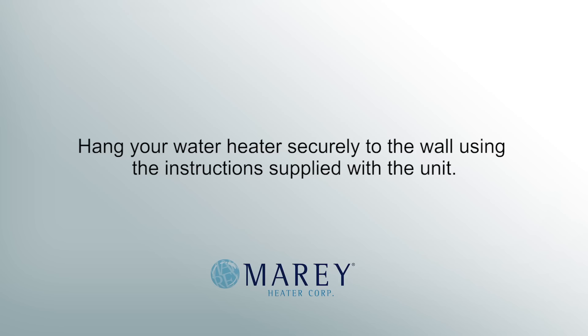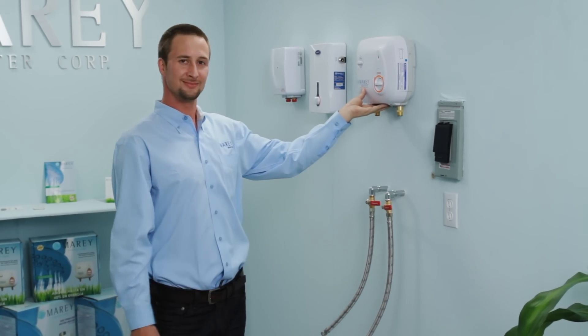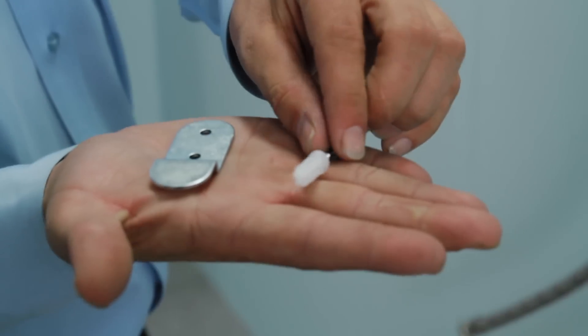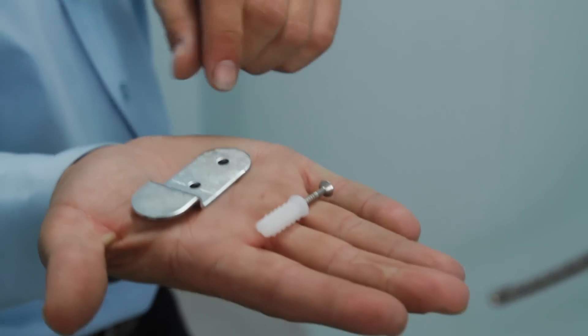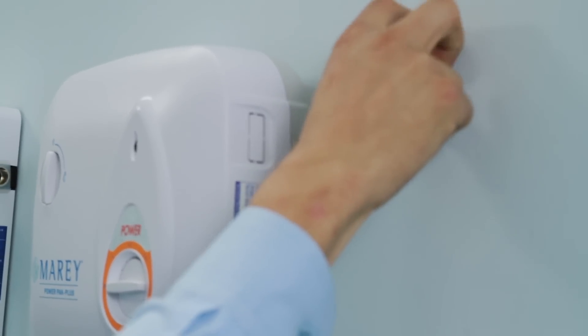Hang your water heater securely to the wall using the instructions supplied with the unit. The hanging instructions will be slightly different depending on which model you have, but you should be sure to mount it to a secure location. Use wall anchors if you aren't able to hang the unit directly from studs. Be sure that the unit is mounted securely to the wall.